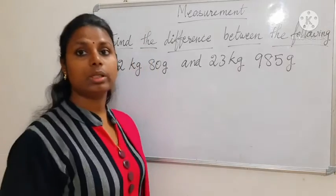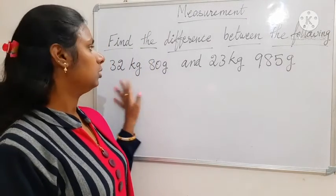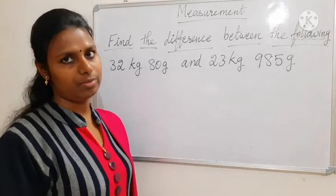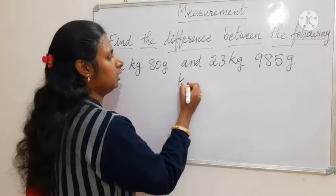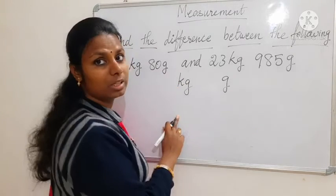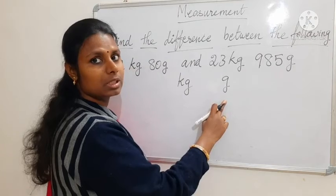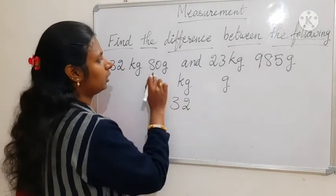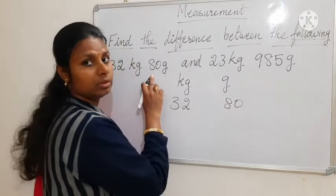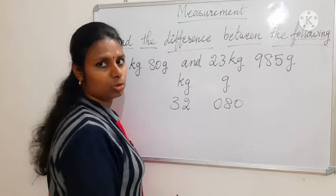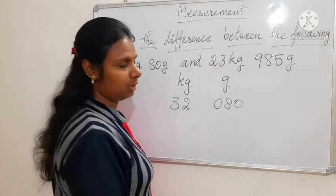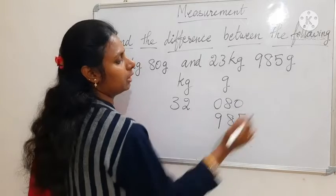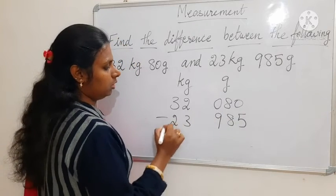Now the next question: 32 kg 80 gram minus 23 kg 985 gram. So we write the units kg and gram. 1 kg is equal to 1000 gram, which means we have to write 3 digits. For 32 kg, remember. For gram, 80 is given, so we have to write one more 0 because 3 digits must be there — making it 080. Then 985 and 23.